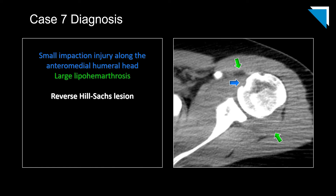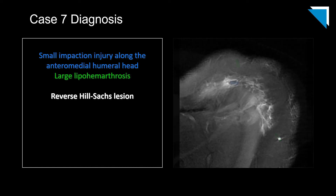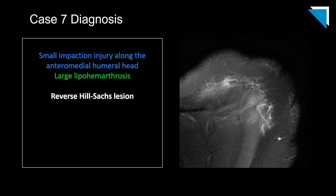The impaction injury in this case is a reverse Hill-Sachs lesion from a posterior glenohumeral dislocation, which is far less common than the anterior dislocations we're used to seeing. The mechanism of injury is generally a blow to the anterior shoulder, forcing the humeral head to dislocate posteriorly. The impaction injury occurs when the humeral head moves back and impacts the posterior rim of the glenoid. If you're not familiar with the anatomy of the humeral head, you might mistake this injury for the normal bicipital groove.